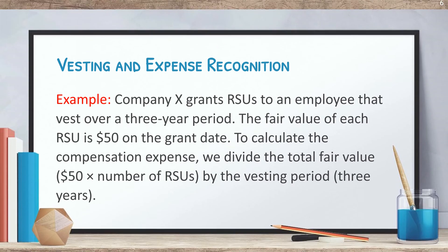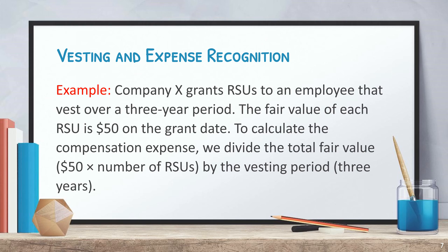For example, Company X grants RSUs to an employee that vest over a three-year period. The fair value of each RSU is $50 on the grant date. To calculate the compensation expense, we divide the total fair value — $50 times the number of RSUs — by the vesting period of three years.